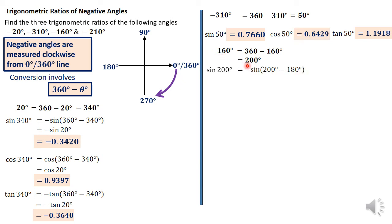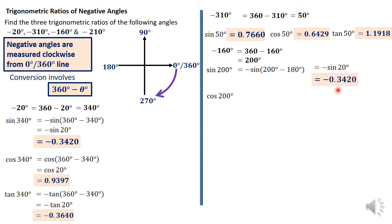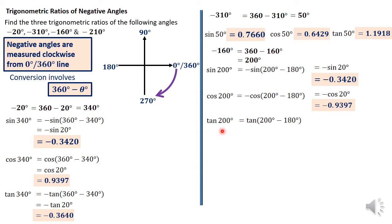The sine of 200° = negative sin(200 − 180°), because 200° lies in the third quadrant where only tan is positive, so sine is negative. The conversion there is theta minus 180°, giving negative sin(20°) = −0.3420. The cos(200°) = negative cos(200 − 180°) = negative cos(20°) = −0.9397. And tan(200°) is positive since tan is positive in the third quadrant: tan(20°) = 0.3640.